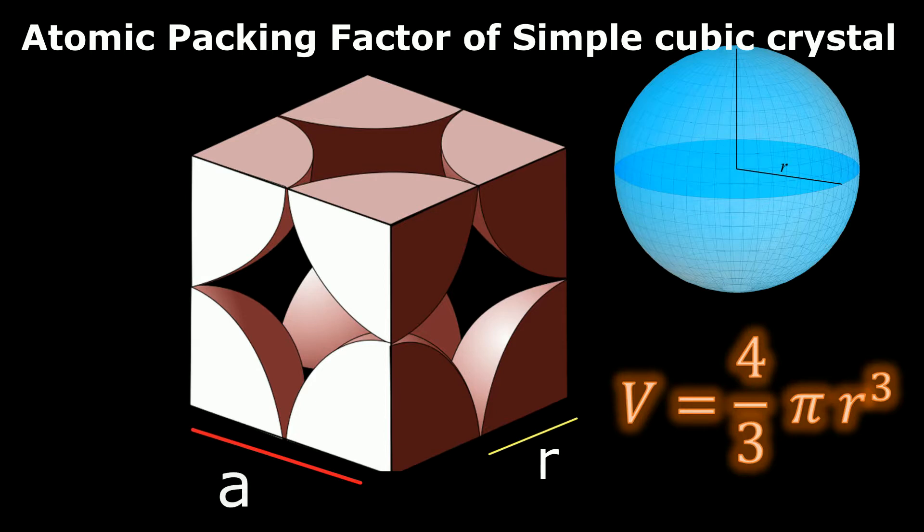Where this a, which is the length of each side of this cube, is equal to the diameter of this atom. And the diameter we know is equal to 2r. So the volume of this cubic unit cell will be equal to 2r whole cube.